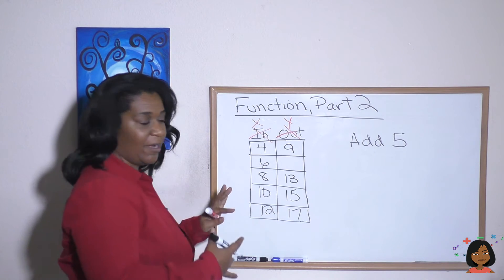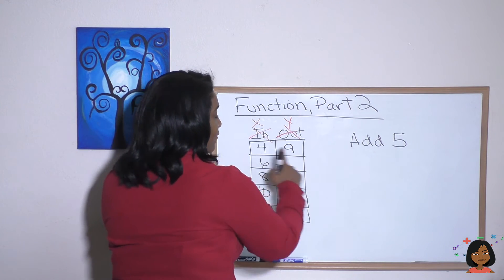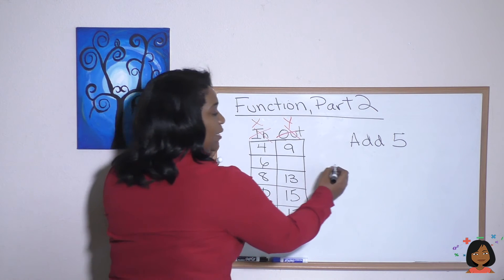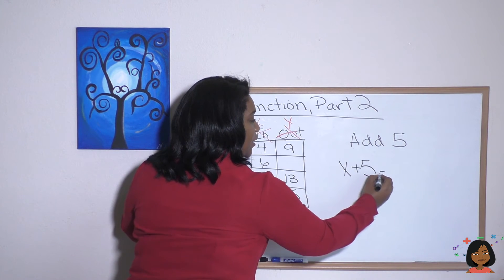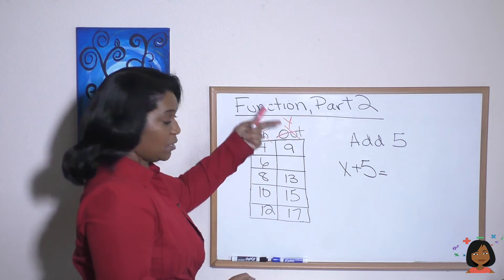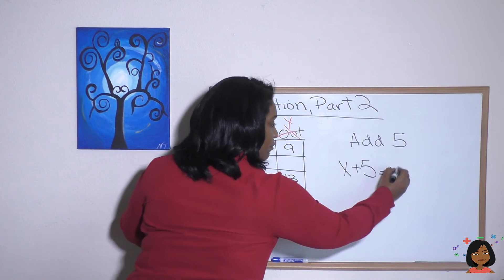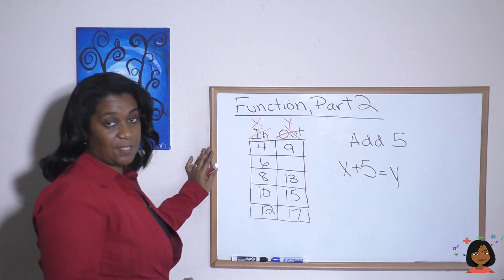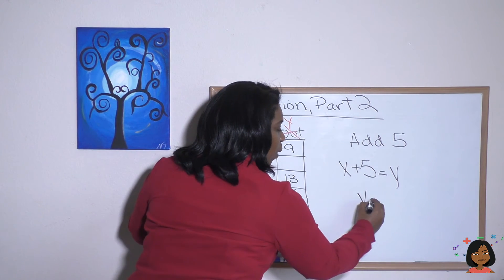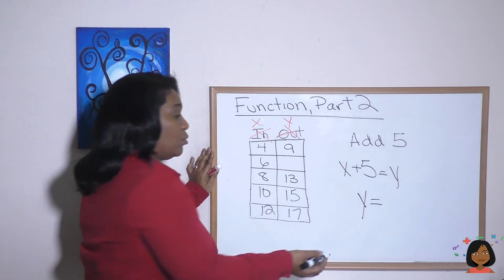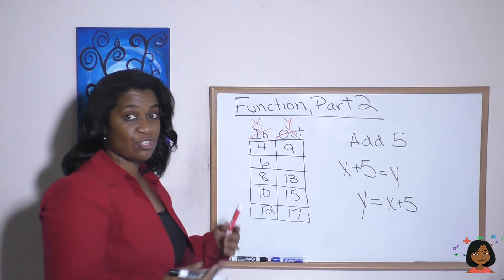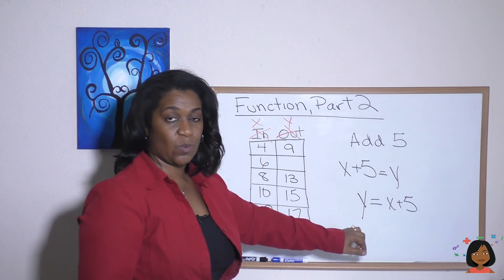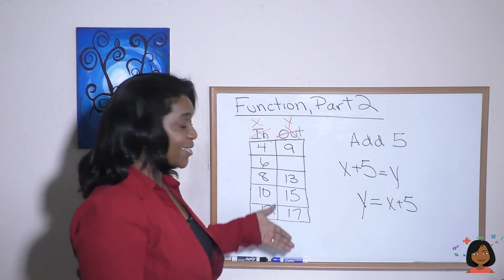What if we instead use variables and said, if we add five to our X, meaning X plus five equals our Y column. And you will find that often people also write it this way. They'll say our Y column is when you add five to your X. So they might actually start with the Y, Y equals X plus five. That's how we got to the Y.